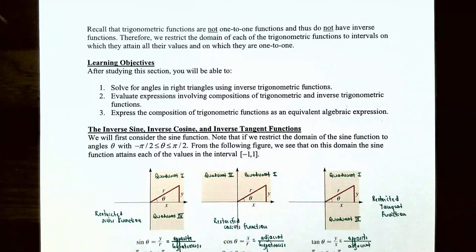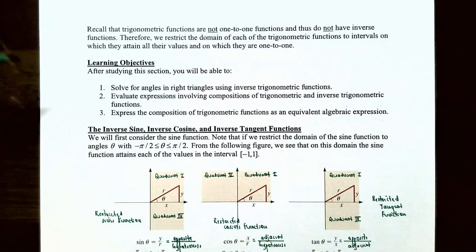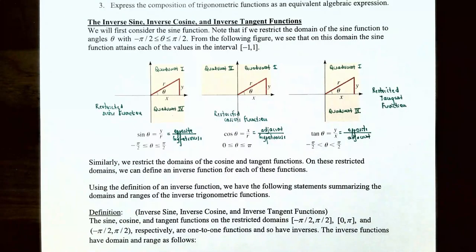However, if you restrict the domain of each of the six trigonometric functions to intervals on which the functions actually attain all the output values on that domain, then they actually become one-to-one functions. In this video we're going to talk about how to solve for angles in right triangles using inverse trigonometric functions — specifically the inverse sine, inverse cosine, and inverse tangent functions.